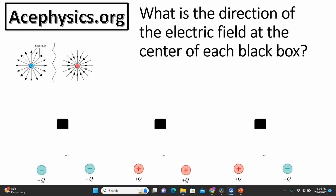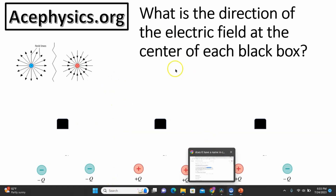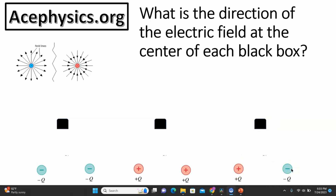Now let's talk about finding the electric field from more than one point charge. What is the direction of the electric field at the center of each box? Everything you need to know about electric fields is covered here: electric fields of point charges look like those two pictures — radially outward for positive, radially inward for negative. The second key idea is superposition: to find the electric field at some point in space, you add up the electric fields from all the nearby point charges and combine them. That's the whole concept — the electric field is a force per charge.